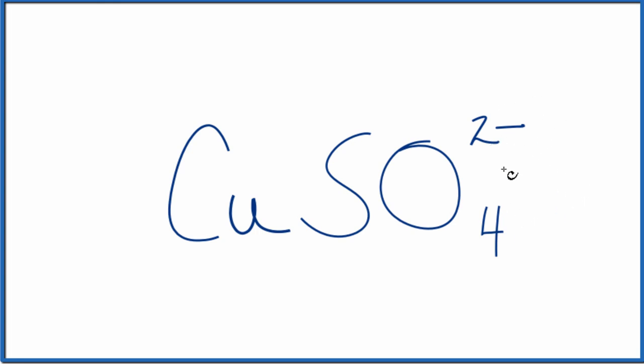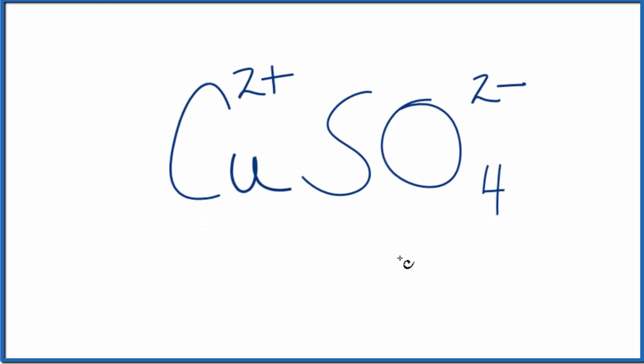So since we have a 2 minus here, and this is an ionic compound, the net charge needs to add up to zero. 2 minus, we need to have a 2 plus. And that's why we're calling it copper 2 when we say copper 2 sulfate. Put this in water.